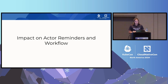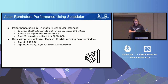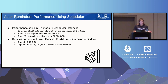The impact on actor reminders and workflows was substantial going from version 1.13 to 1.14, which included the scheduler. We saw performance gains for actor reminders with the scheduler in HA mode — three instances. We were able to schedule 50,000 actor reminders with an average trigger QPS of roughly 4,500, which was at least a 10x improvement. Invoking the scheduler Jobs API directly, we observed a QPS of up to 35,000 for triggering. For creating actor reminders, version 1.13 had a QPS of 50; now with the scheduler that is 4,000 — an 80x improvement.